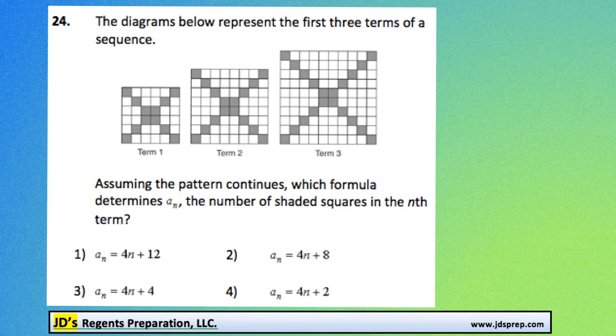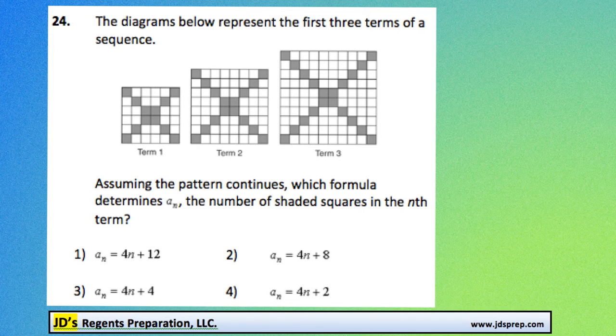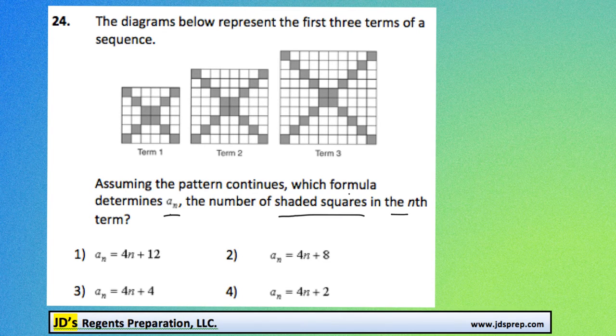Welcome to problem number 24 from the June 2014 Algebra Regents exam. In this question we've got a pattern of squares forming here, and assuming the pattern continues, we need to find out the formula that determines a sub n, which is the number of shaded squares in the nth term.